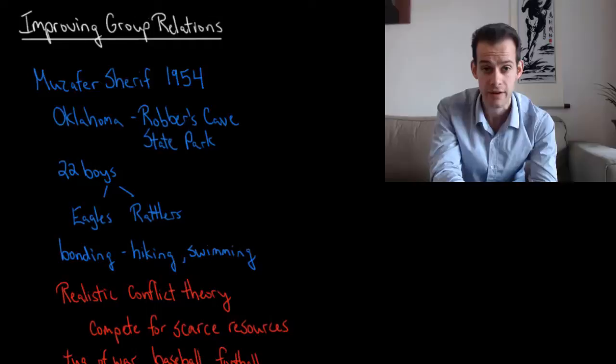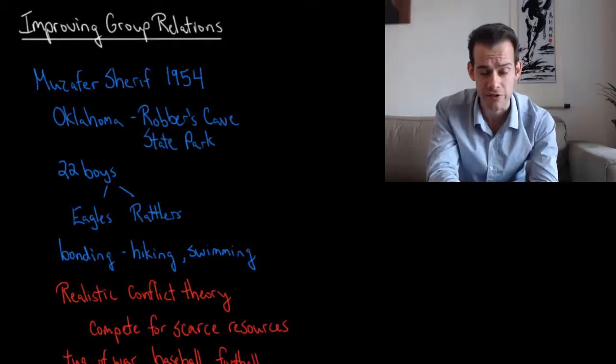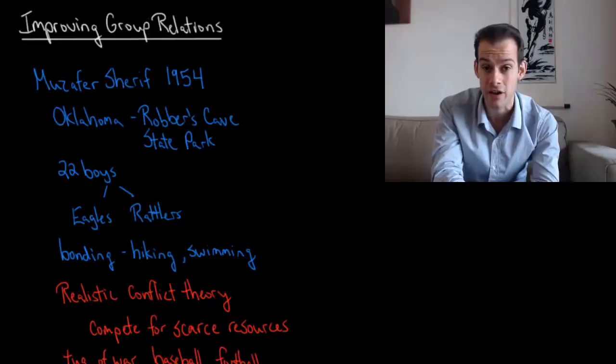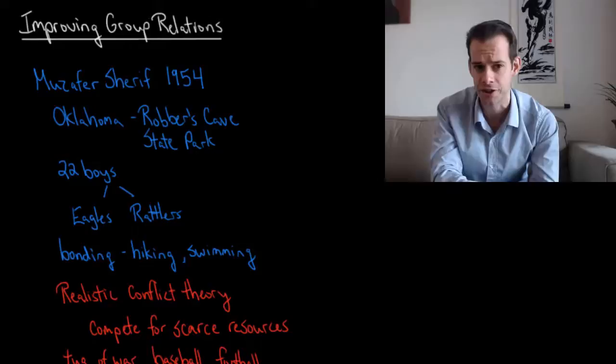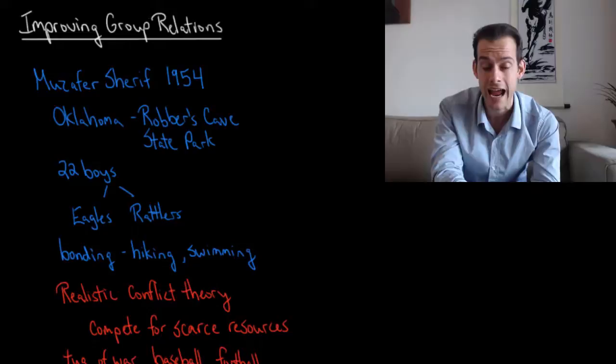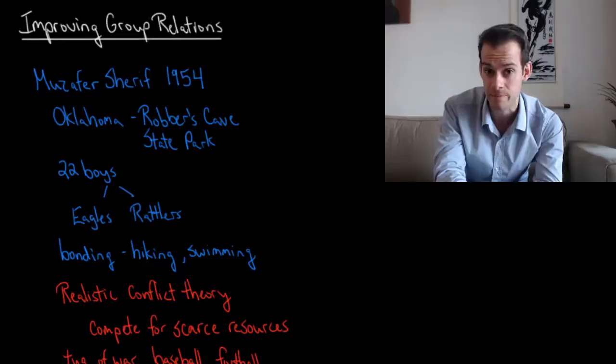In this video we're going to consider how we might be able to improve group relations. Historical examples of group conflict are complicated because they've often lasted for years, decades, centuries, even millennia. This means that even experts aren't fully aware of all of the factors involved in the creation and maintenance of the conflict. It also means these long timescales make it difficult to assess how successful we've been in reducing the conflict. So we might hope for a simplified version of group conflict — one where we know the causes and where it's short enough that we might be able to tell if we've successfully reduced the conflict.